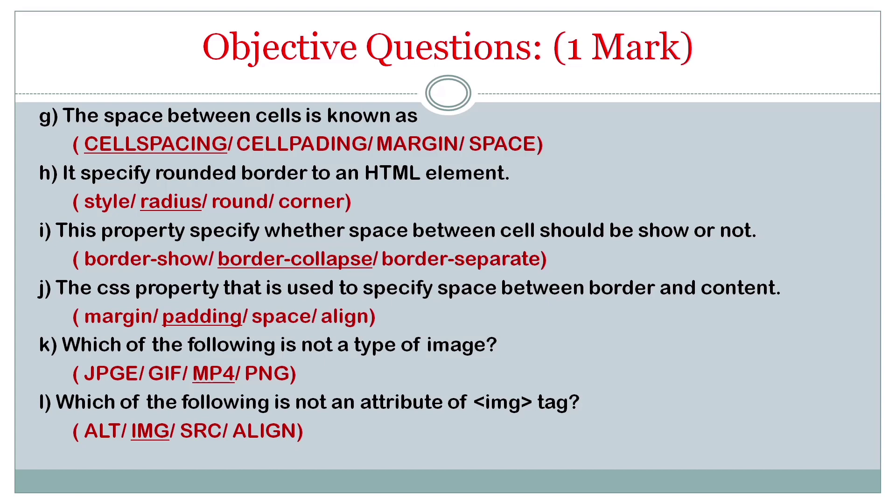The value is collapse for hiding the space, and to show the space it is separate. The CSS property that is used to specify space between border and the content - it is padding.